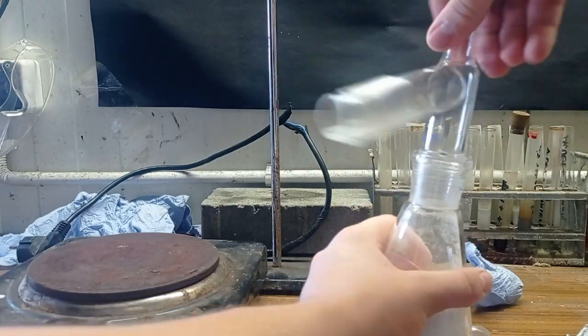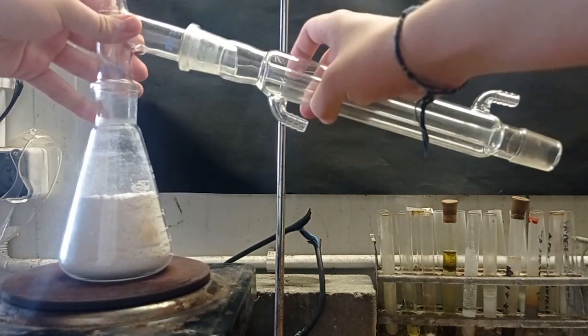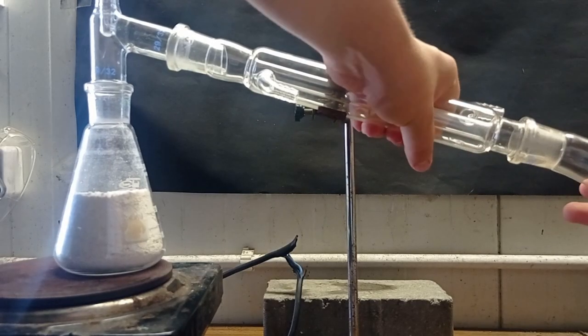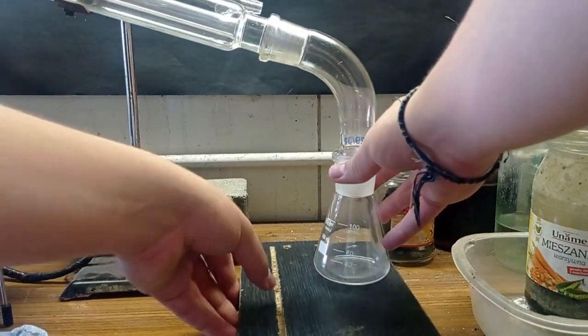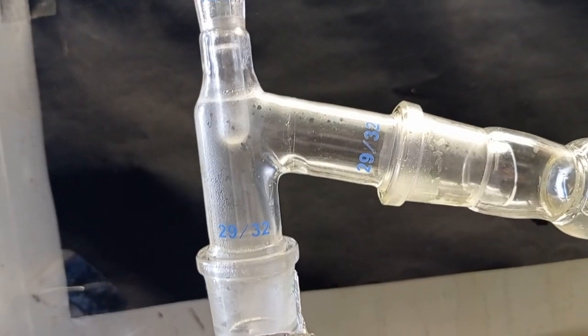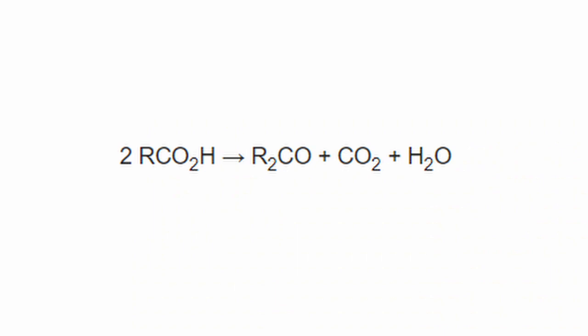I set the apparatus, covered the flask, and started heating it. The temperature required here is above 350 degrees Celsius. After a while I can see something distilling off. What is happening here is called ketonic decarboxylation.